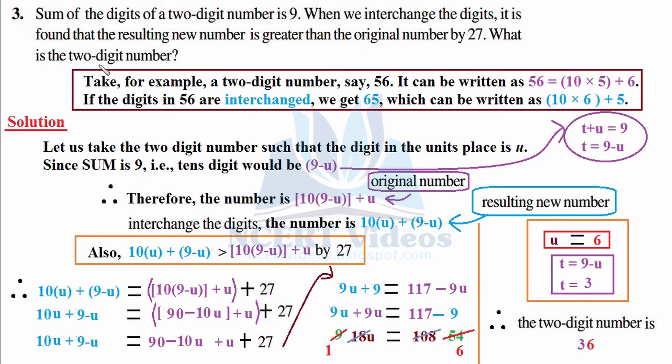Prior to solving this question, let us discuss a bit of concept. Take for example a two-digit number, say 56. You know very well from your previous standard, the place where 6 is written is called the units place and where 5 is written is called tens.